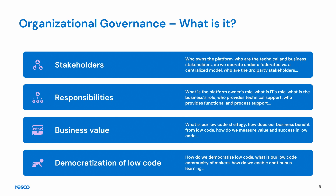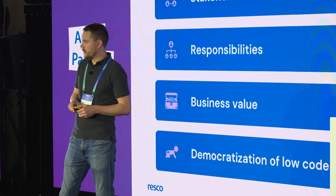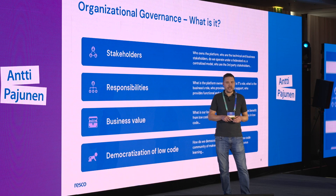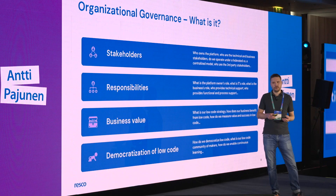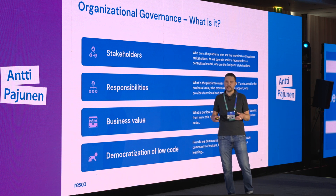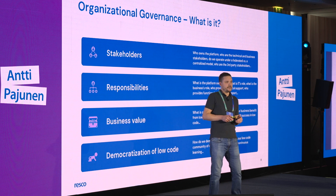The organizational governance part — what is that? That is stakeholders, responsibilities, business value, and democratization of low-code — essentially the same as evangelism. Stakeholders are something that we really need the customer for, and for the customer to really understand how their organization works. That's usually a black box when we go in. Responsibilities is a big topic. A lot of times we go in to talk governance and roles and responsibilities really aren't clear. Who does what? Do we need to hire a new full-time employee to work on something?